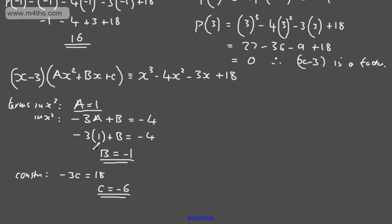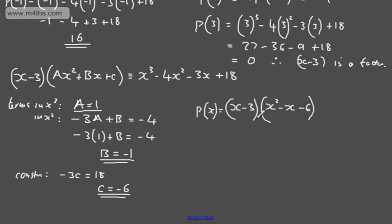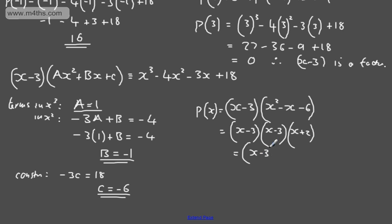So this is one of many ways to do it — I've equated coefficients by setting up an identity. So p(x) = (x - 3)(x² - x - 6). We can factor this further: x² - x - 6 = (x - 3)(x + 2). So p(x) = (x - 3)²(x + 2) as a product of three linear factors.